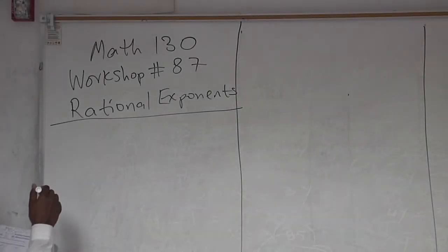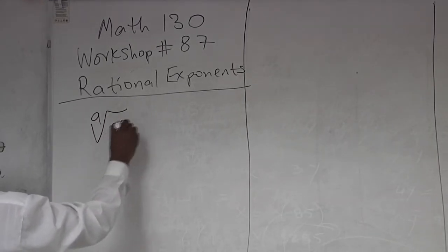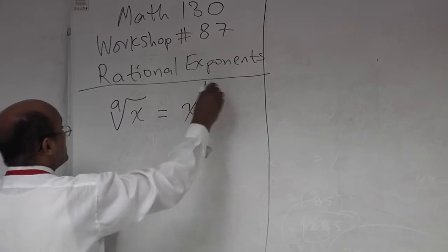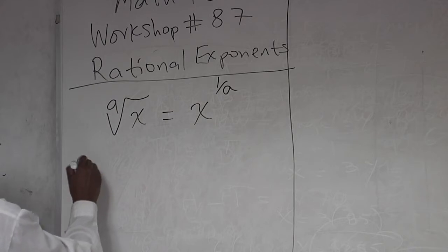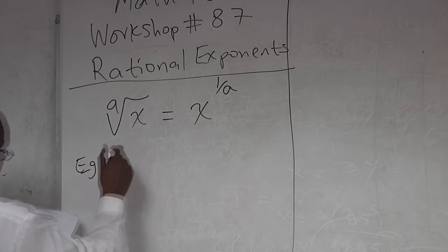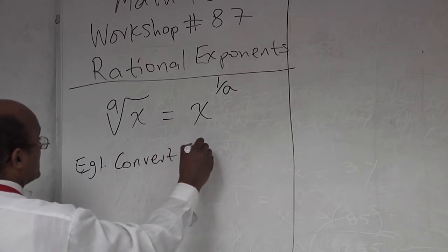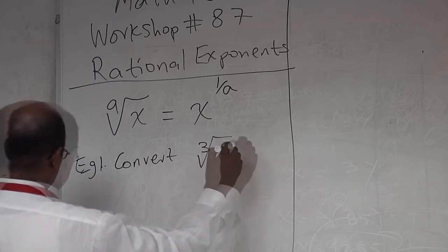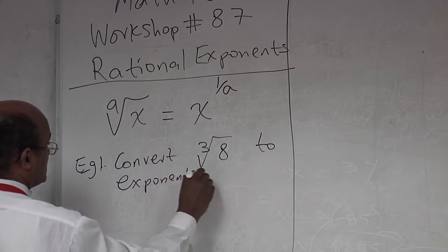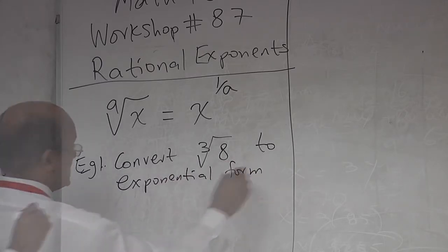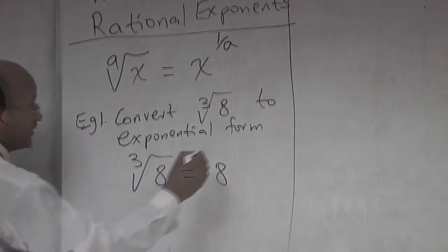Let me give you an example. The nth root of x means x to the power of 1 over n in general. So convert the third root of 8 to exponential form. The third root of 8 means 8 to the power of 1 over 3.